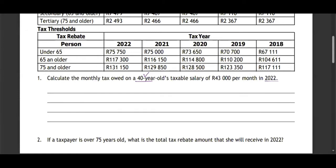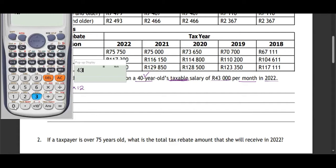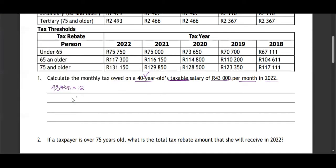The money the person gets — this is already taxable income. How much? R43,000. This is per month, so it's not yet annual. The first thing you do is multiply: 43,000 × 12 = 516,000. So this is the money he earns throughout the year.